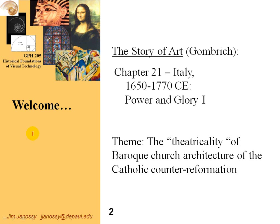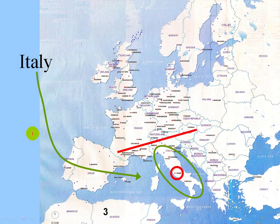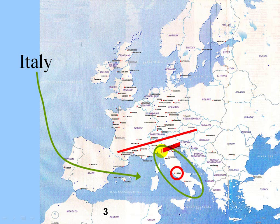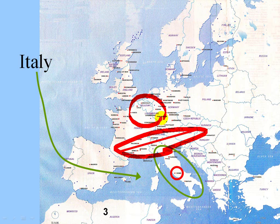This period is known as the Catholic Counter-Reformation. What we're talking about here is, as this arrow indicates, Italy, south of the Alps. This area in northern Europe we'll consider later. Here we have the city of Rome right in the middle of Italy.